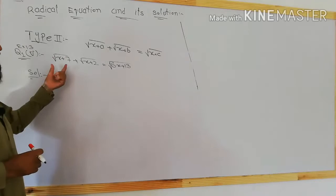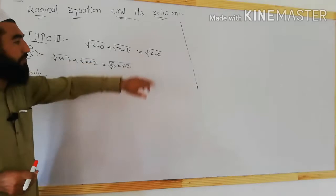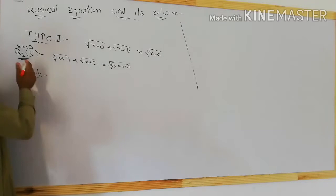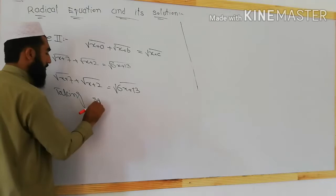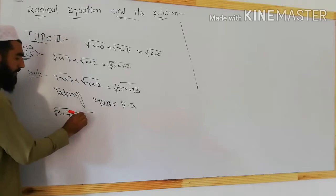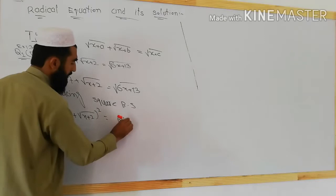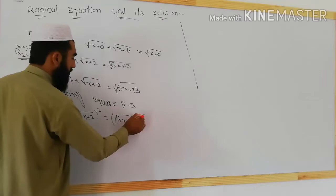Now for the second type: √(x + a) + √(x + b) = √(x + c). Taking question number 1, part 5: √(x + 7) + √(x + 2) = √(6x + 13). To solve, we take the square of both sides. Squaring both sides: (√(x+7) + √(x+2))² = 6x + 13.